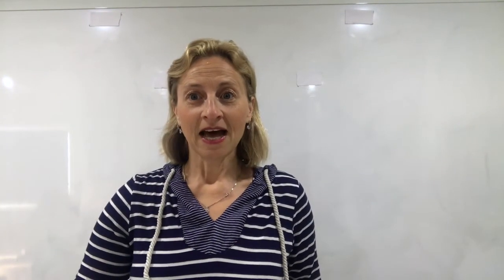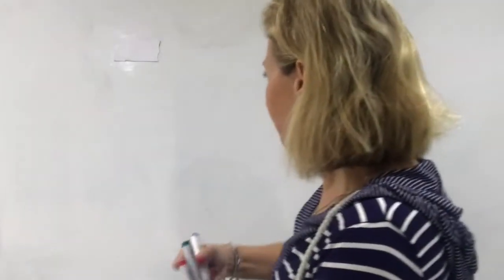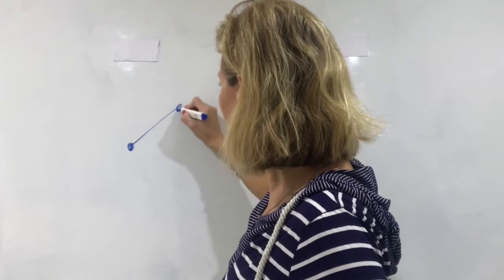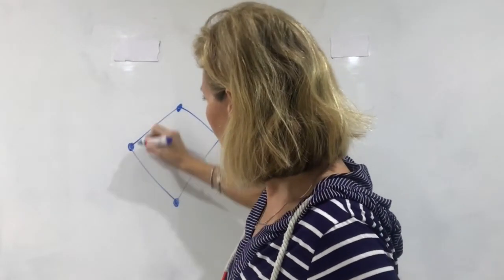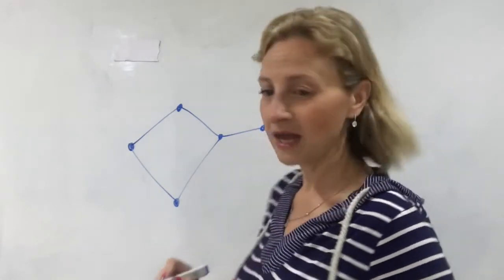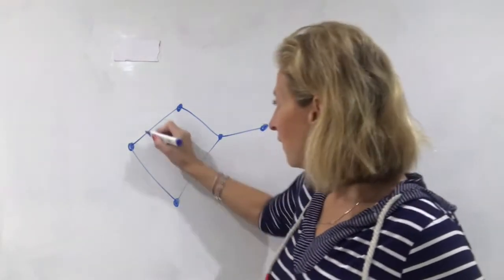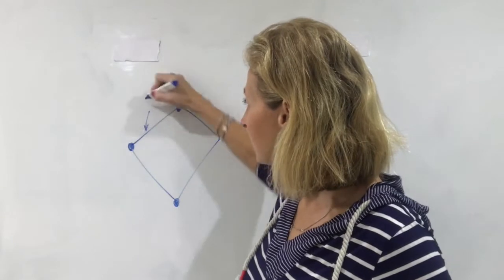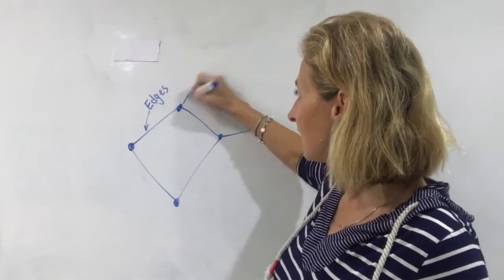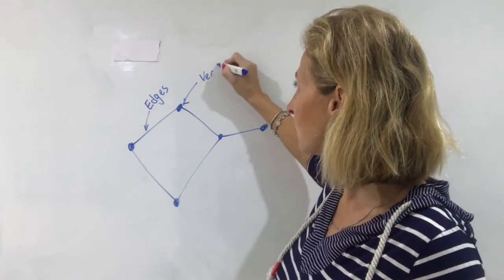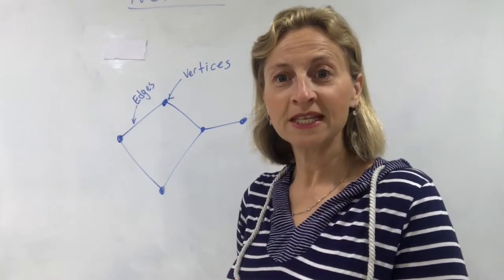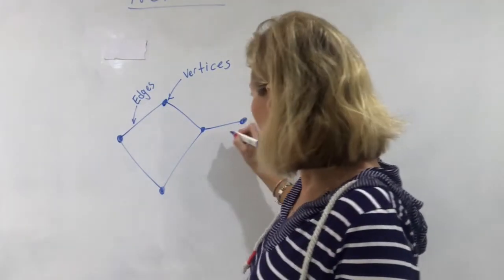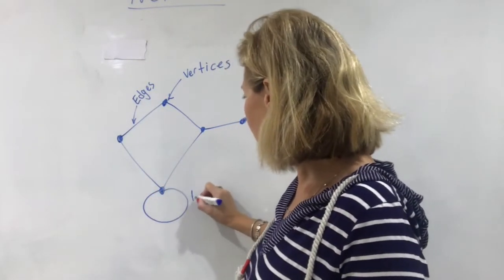So basically a network is a bunch of points and lines. These are called the edges — they're the lines — and these are called the vertices, the dots. A loop is an edge that joins the same vertex and will look like this. That is a loop.